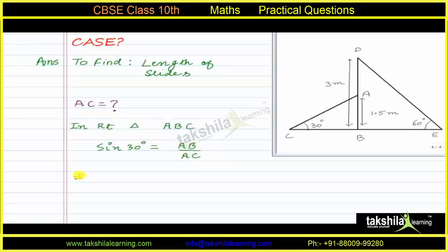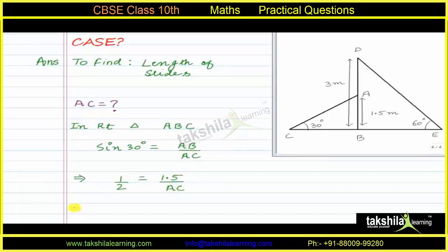Sin 30° = opposite side / hypotenuse = AB / AC. We know that sin 30° = 1/2. Putting the values: 1/2 = 1.5 / AC. Cross multiplying, AC = 1.5 × 2 = 3 meters.